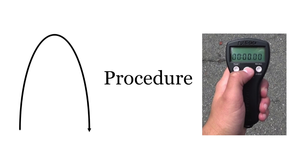Step 5: Write down each person's name and their total flight time in the data table on the next page. Please enjoy this demonstration of the lab. The timer can be seen in the light blue shirt.